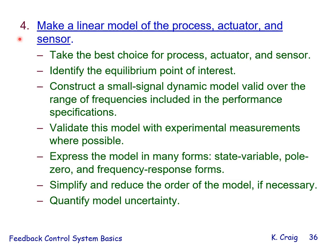Step 4: make a linear model of the process, actuator, and sensor. Take the best choice for process, actuator, and sensor. Identify the equilibrium point of interest. Construct a small-signal dynamic model valid over the range of frequencies included in the performance specifications. Validate this model with experimental measurements where possible. Express the model in many forms: state variable, pole-zero, and frequency response forms. Simplify and reduce the order of the model if necessary, and quantify model uncertainty.